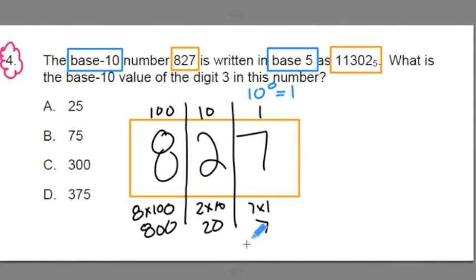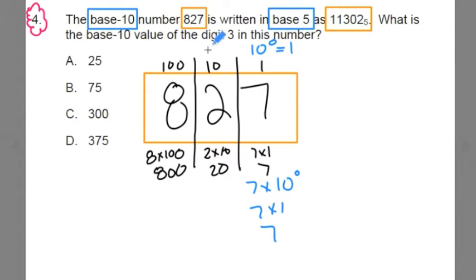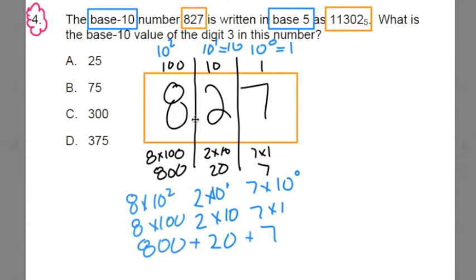This 7 here is really 7 times 10 to the 0 power, which is 7 times 1, or 7. And this one right here, 10, is really 10 to the 1st power, which is equal to 10. So this 2 here is really 2 times 10 to the 1st power, or 2 times 10, or 20. And 100, well see this pattern here, 10 to the 0, 10 to the 1st, this 100 is going to be 10 to the 2nd. We always start with the base to the 0, the base to the 1, the base to the 2. This is 8 times 10 to the 2nd, or 8 times 100, or 800, and it gets us this value of 827.